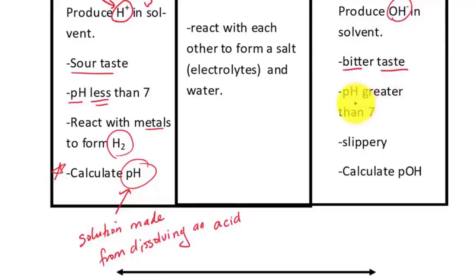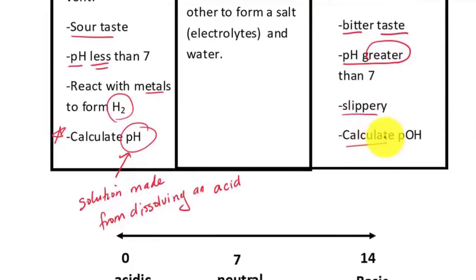On the pH scale, remember acid and base are kind of opposite to each other. In this case, if acid is less than 7, pH for a base would be greater than 7 on the pH scale. Another characteristic of bases is they are very slippery. Think of soap, like hand soap. When you have a solution that's made from dissolving a base, you have to calculate the pOH first. You cannot calculate pH directly from a solution that's made from a base.